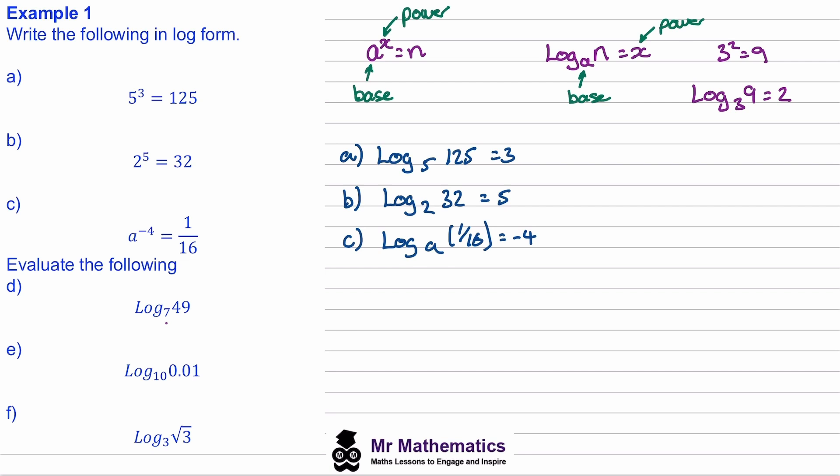Okay, so moving on to question d, if we have the log of 49 to the base 7, well to write this as a power, we'll have 7 of our base raised to a power will equal 49, and we know 7 squared is 49, so our power will equal 2.